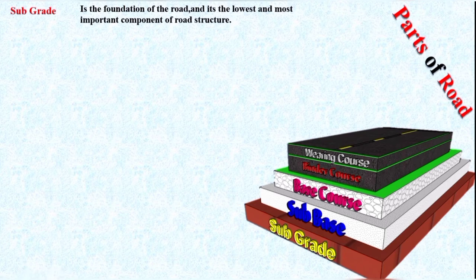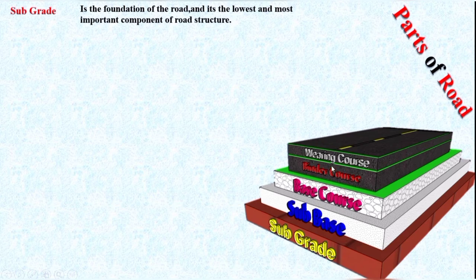Now, the sub-base basically consists of fine aggregate, or you can say crushed stone. For the base course, the aggregate size is more than in the sub-base course. The sub-base and base course are constructed above the subgrade. They do not need to be provided if the subgrade is of very high strength.